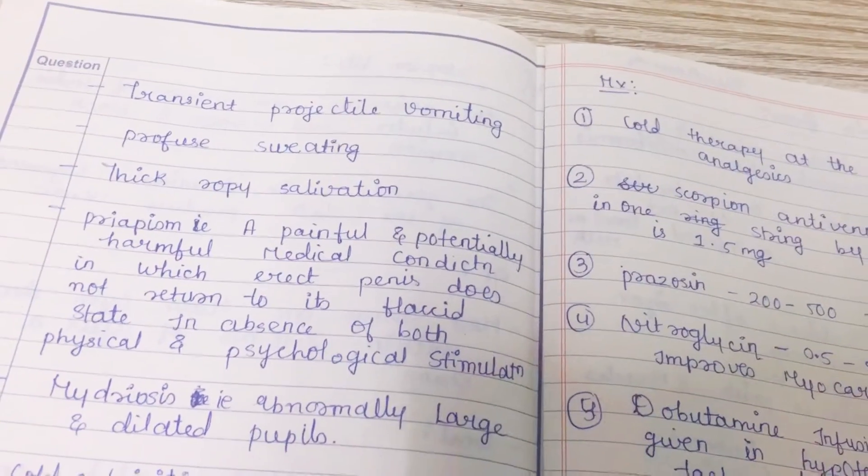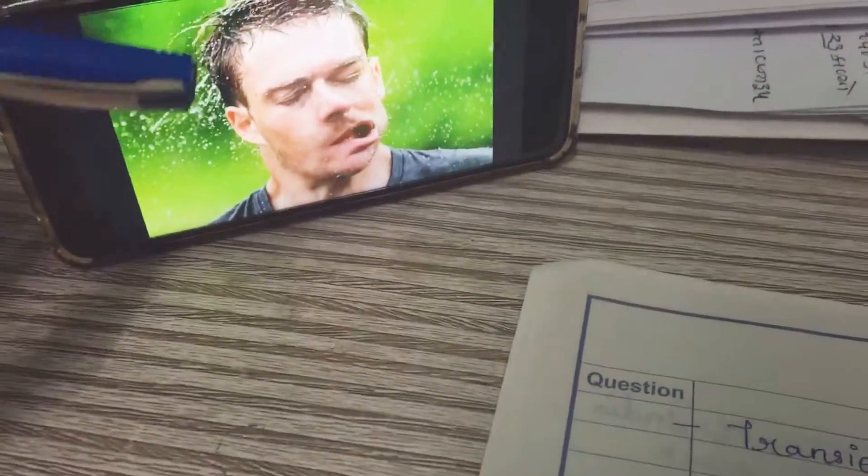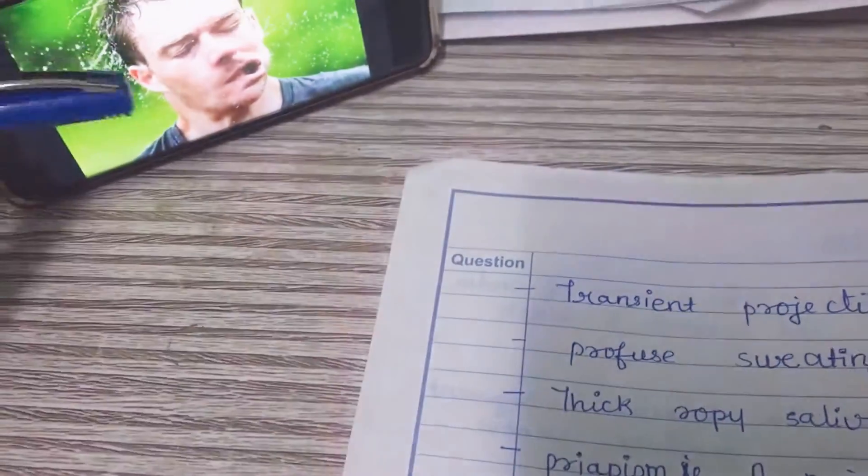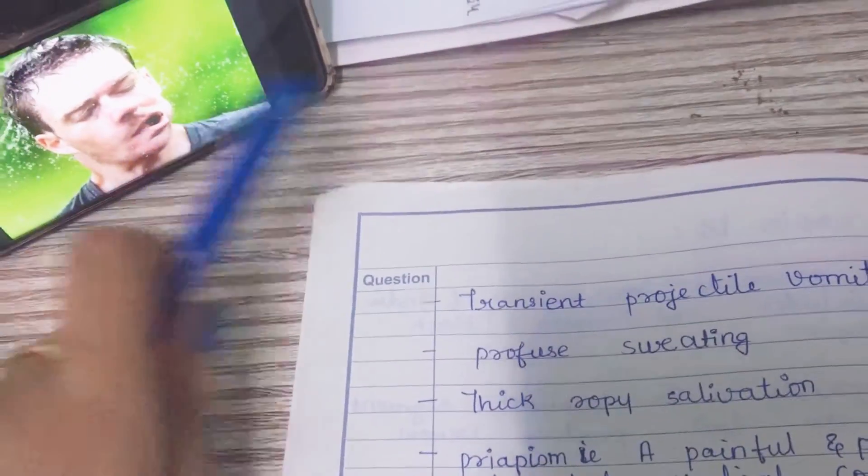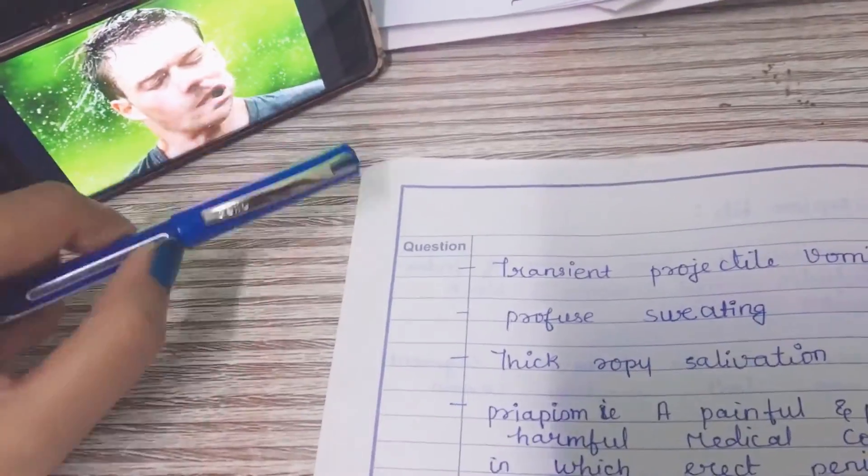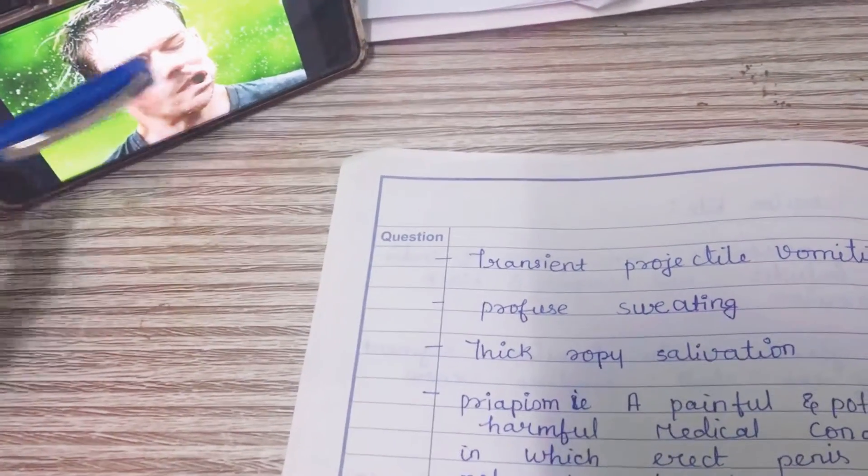Profuse sweating - the patient will sweat profusely, which is also characteristic. Profuse sweating and transient vomiting. There is thick copious salivation. The salivation will eventually become very thick and intense. Sweat, thick salivation, and vomiting all together can occur.